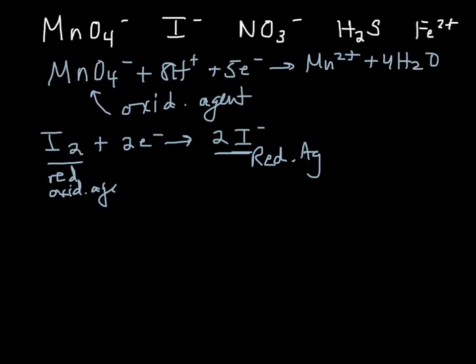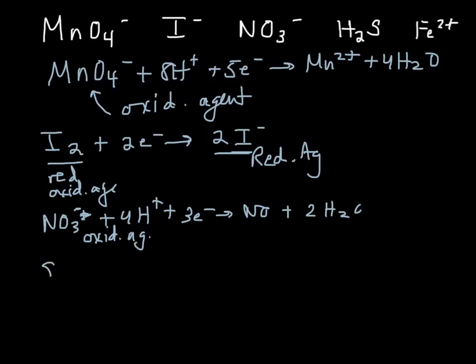So if we keep going, NO3-: you'll find NO3- + 4H+ + 3e- gives you NO + 2H2O. So again, that's NO3- over here. It's being reduced, so NO3- is an oxidizing agent. Again, it just means NO3- is being reduced. For S, you can find S + 2H+ + 2e- gives you H2S. Again, H2S is over here. That means it's a reducing agent.